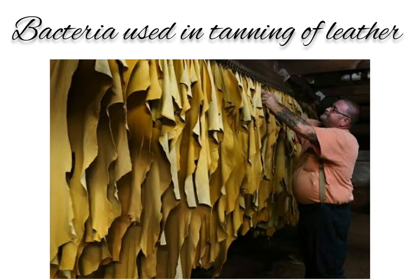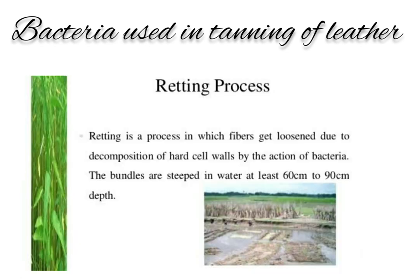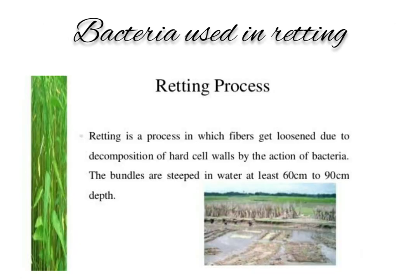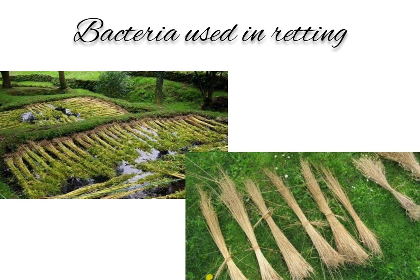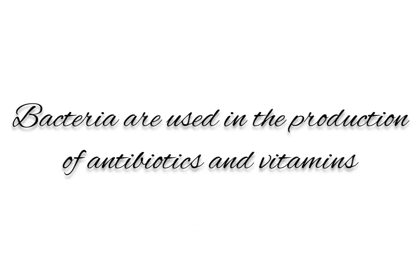The process of treating animal skin to produce leather is called tanning. Separation of fibers from the long stem of fiber plants such as flax and jute is called retting of fibers. Tanning and retting are done by the action of bacteria. Medicines such as antibiotics and vitamin B complex tablets are also manufactured with the help of bacteria.